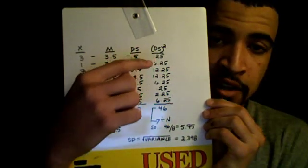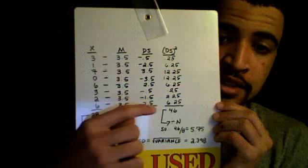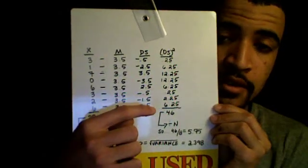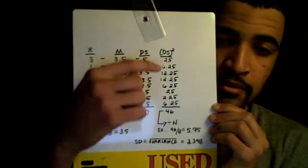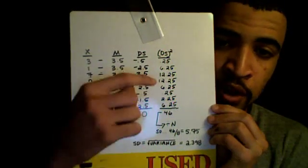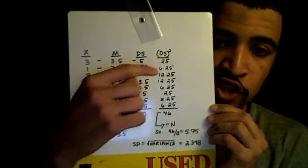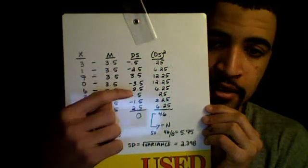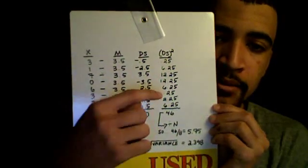When you add all these values up, you get 46. This 46 is called the sum of squares — that is the sum of the deviations squared. I took the deviation scores, squared them, and added them up. The deviations represent the amount of spread from the mean, so with a mean of 3.5, it's just the amount of spread that each score has.